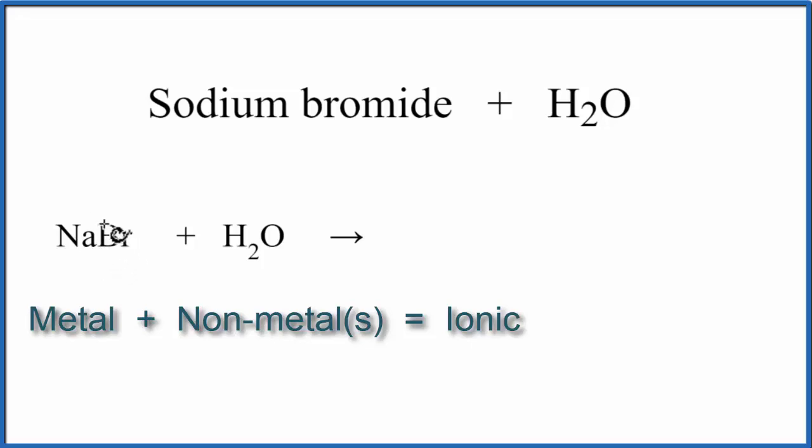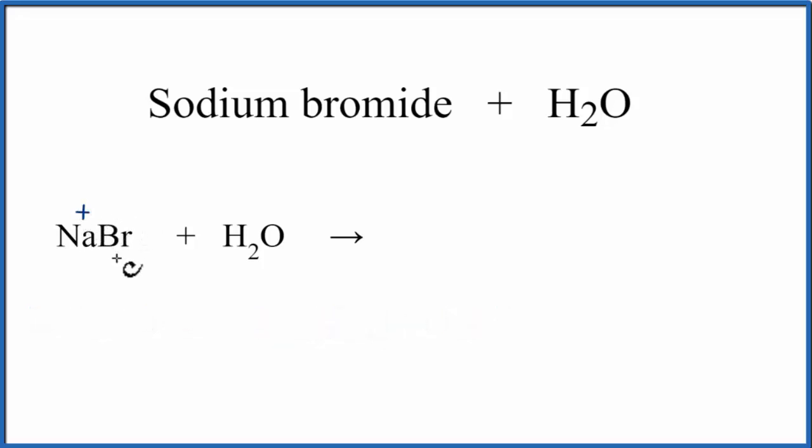When we look up sodium on the periodic table, it's in group 1, so it has a 1 plus charge. Bromine is in group 17, or sometimes called 7A, and it has a 1 minus charge.